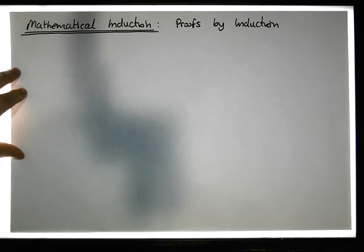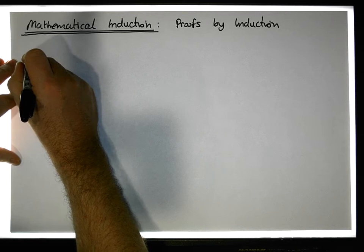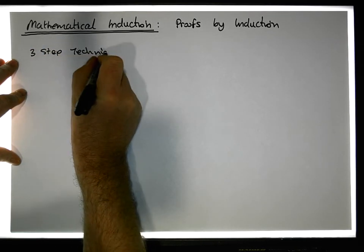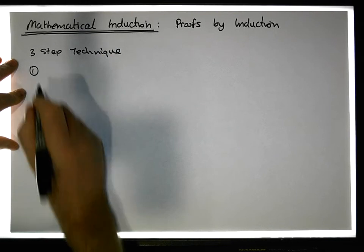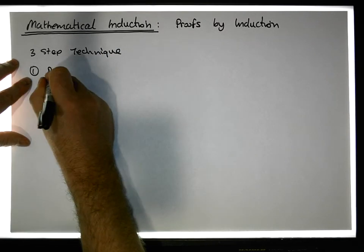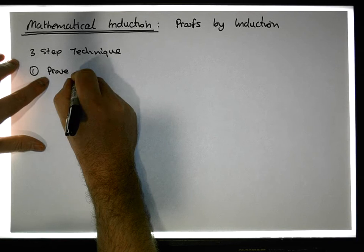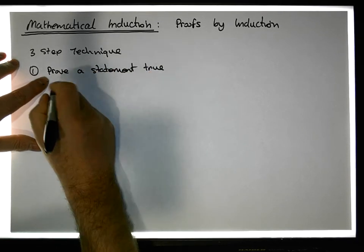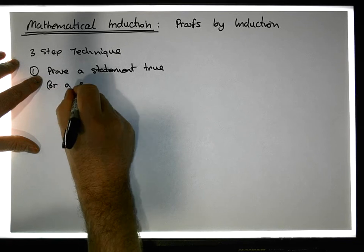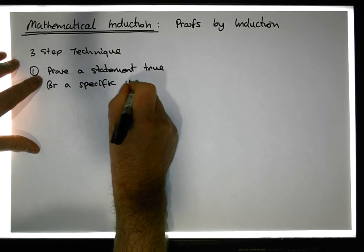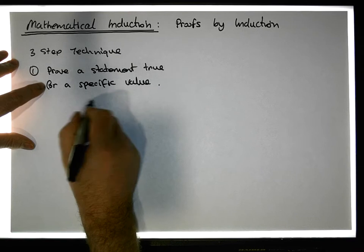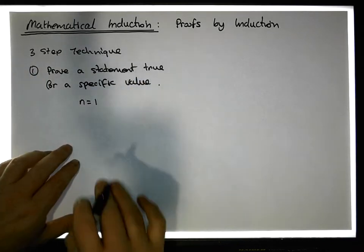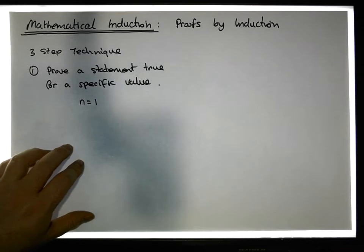Let's concentrate on mathematical induction — it's a three-step technique. The first step is that we prove a statement true for a specific value. The starting point is typically n equals one, so we put in n equals one and show that the statement is true when this value is substituted in.